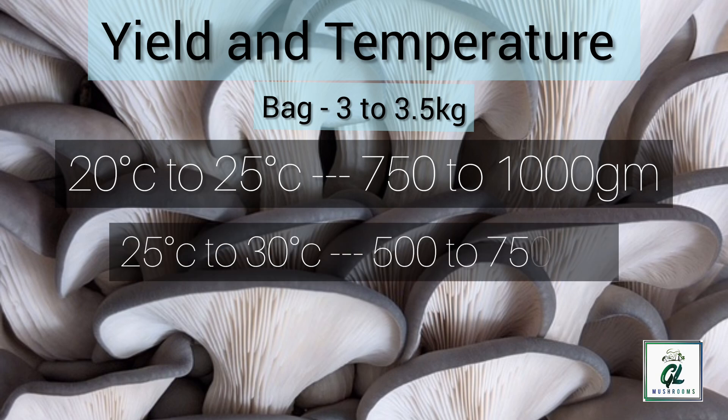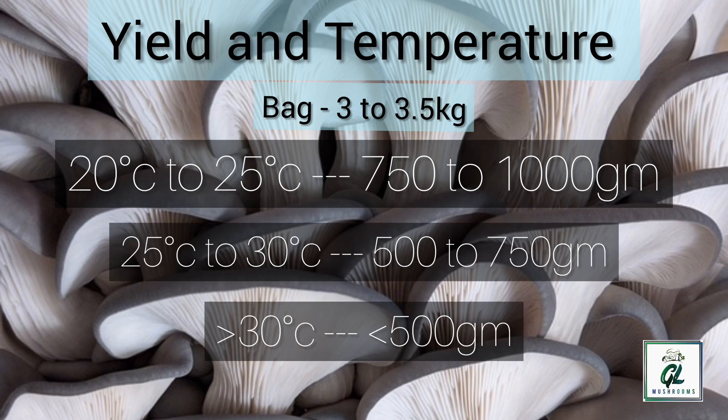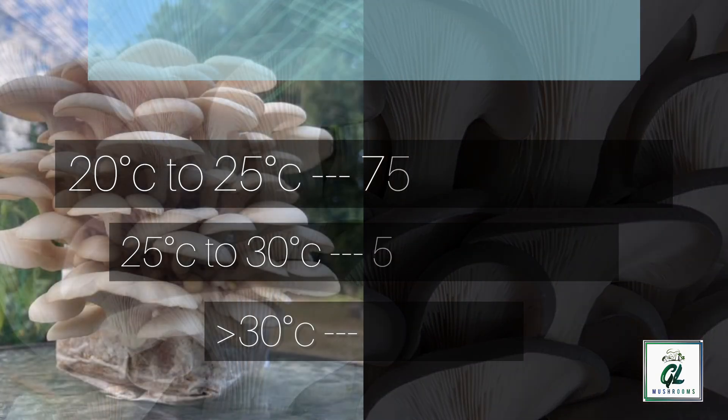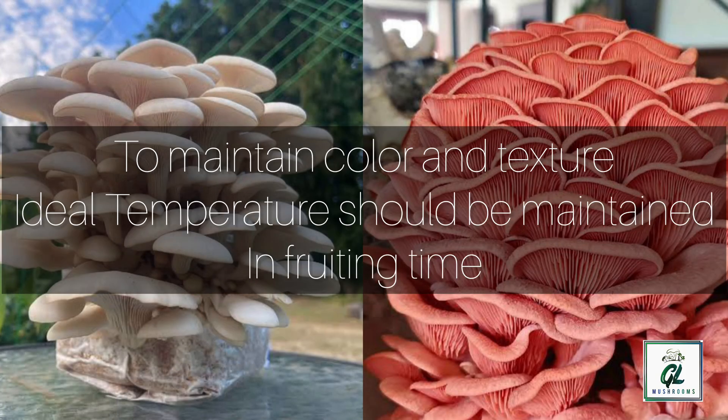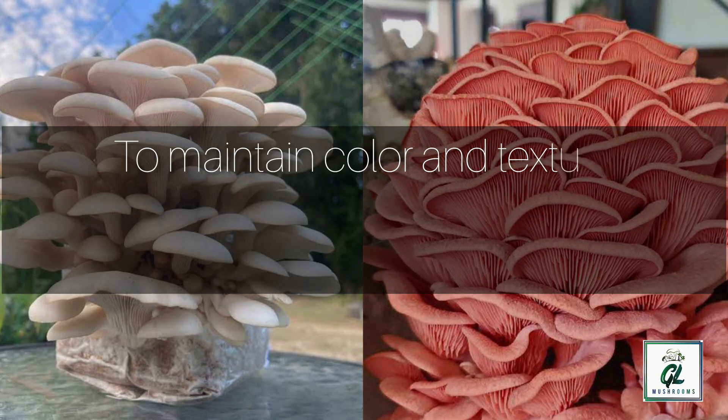Temperature directly affects the yield of mushrooms. As shown on the screen, the ideal temperature gives the maximum yield, and as the temperature rises the yield reduces. The bright colors we see in the photos can only be achieved with proper humidity, temperature, and oxygen.